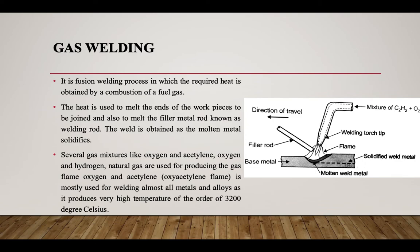Gas welding is also a fusion welding process in which the required heat is obtained by combustion of a fuel gas. A fuel gas — such as acetylene — and oxygen are mixed together and burned in a torch, producing a flame. The heat of the flame melts the ends of the workpiece to be joined and also melts the filler metal rod, known as the welding rod. The weld is obtained as the molten metal solidifies. Oxyacetylene flame is mostly used, as it produces a very high temperature of around 3200 degrees Celsius.